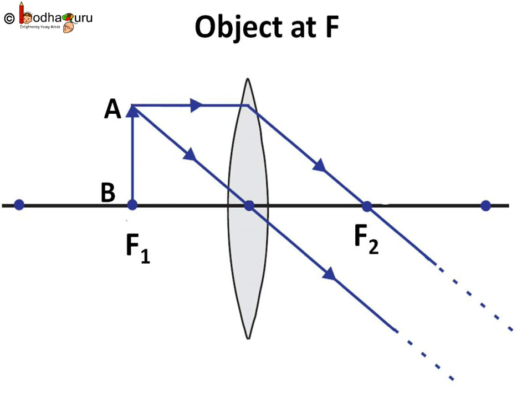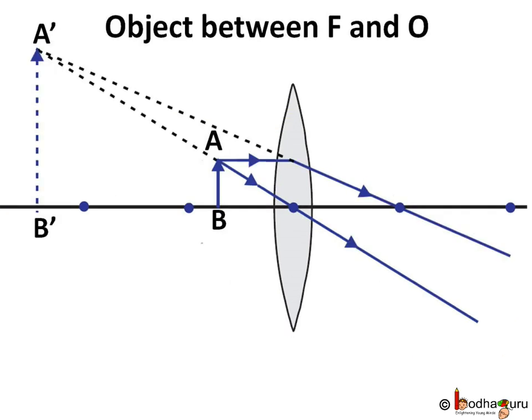But if we place the object between focal point and O, we get a virtual image which is erect and magnified. As we can see here, the rays are coming from the tip A, diverging after the refraction. Here we don't get a real image. We need to extend the rays backwards and we get a magnified virtual image.